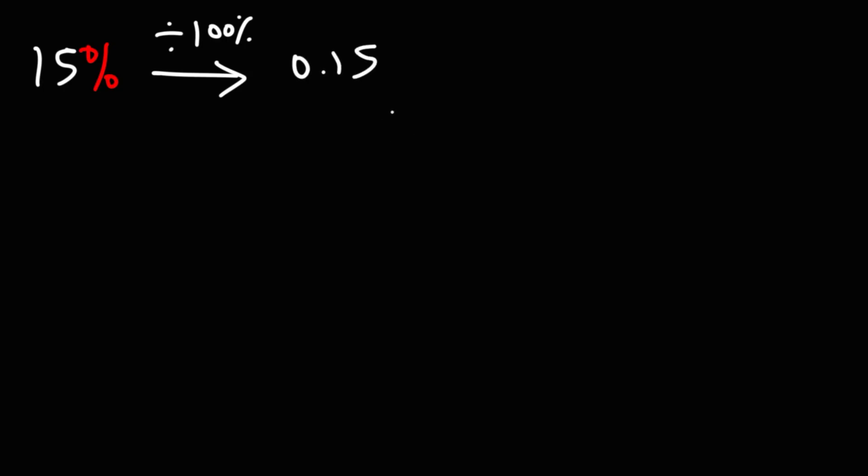Now this number goes to the hundreds place. So what we're going to do is put it over 1 and multiply the top and bottom by 100. Multiplying across, we have 0.15 times 100, which is, you just got to move the decimal 2 units to the right. That will give you 15. On the bottom, 1 times 100 is 100.